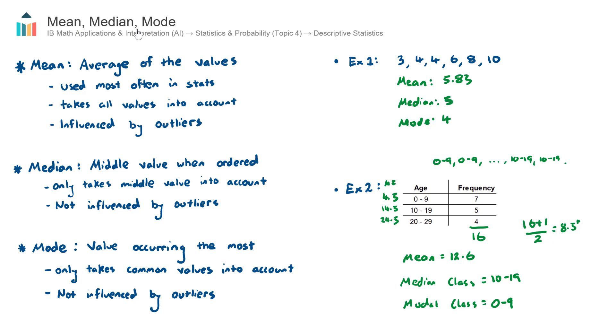That concludes our video on mean, median, mode. Just to summarize again, these three statistics are ways that we can describe the center point of a range of data.